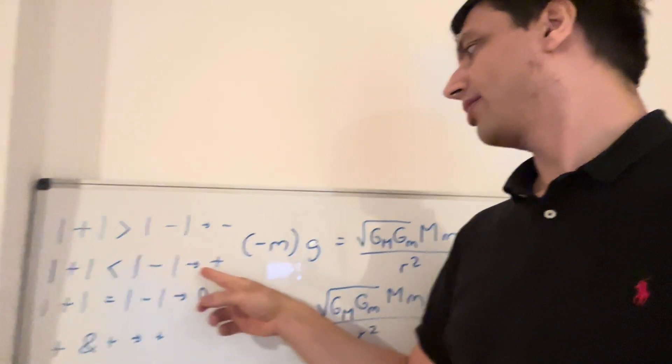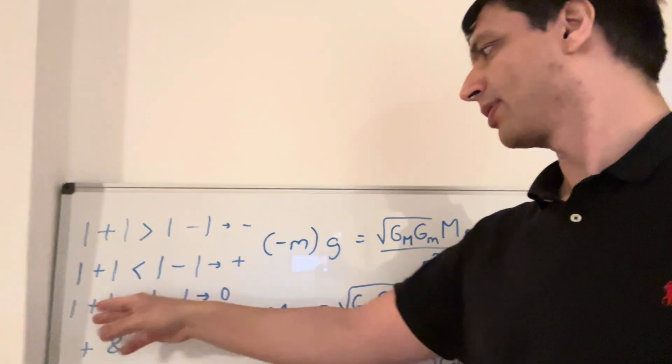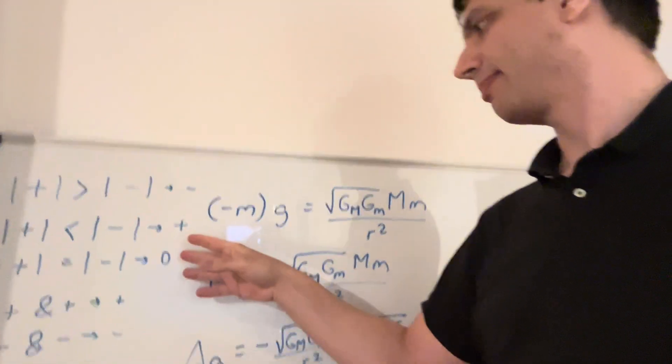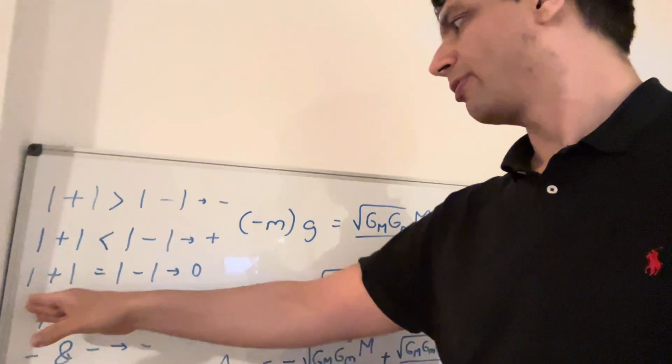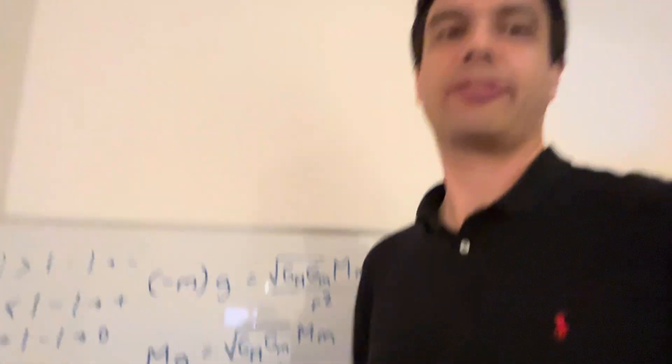When the small mass is bigger, then you get a positive acceleration, relative acceleration. When both are the same, then it's zero. When both are positive, you get a positive acceleration, and both are negative, you get a negative acceleration.